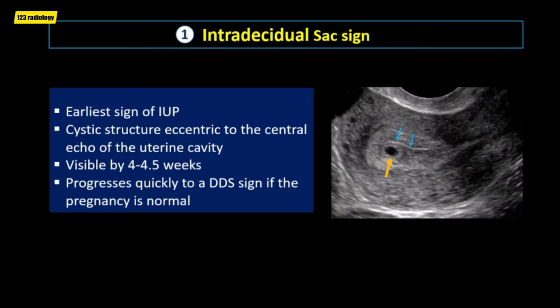The intradecidual sac sign progresses quickly to a double decidual sac sign if the pregnancy is normal.